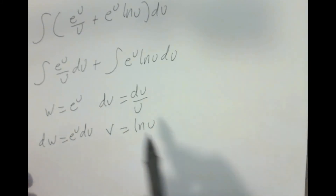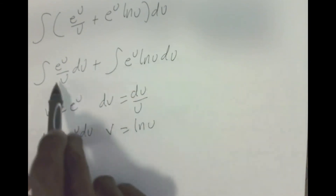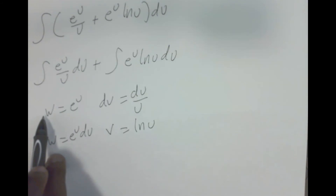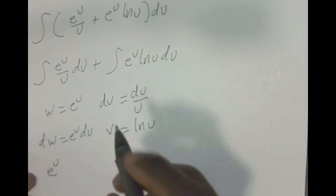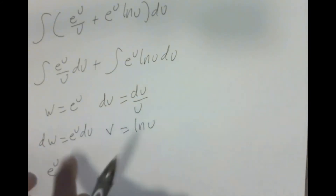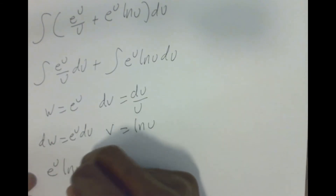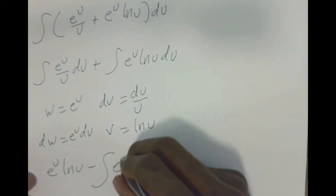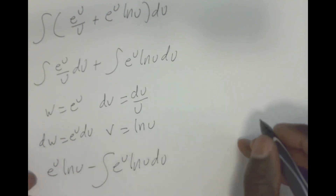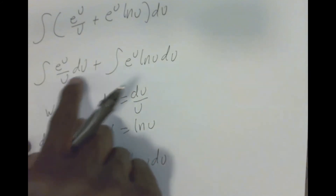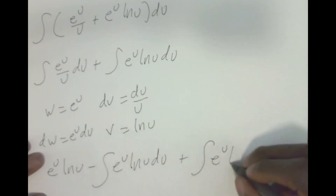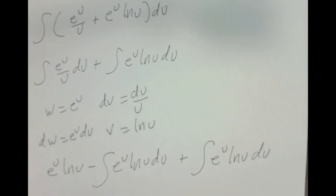Now we go ahead and do integration by parts. Remember, we still have the first integral — the integral of e^U over U · DU — that I haven't dealt with yet. Applying IBP to the second integral gives W · V minus the integral of V · DW, which is e^U · ln U minus the integral of e^U · ln U · DU. And we still have the plus integral of e^U · ln U · DU from the split.